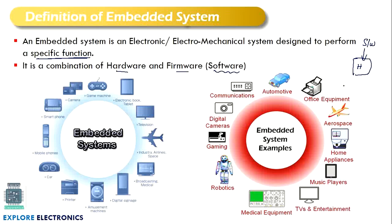A few examples: an embedded system can be an automotive car where many functions of the car will consist of an embedded system. A printer can be an example, and a few operations in aerospace can be an example. The best example is a digital camera, gaming equipment, toys, or robotic equipment. So a gaming machine, camera, and smartphone are a few examples.